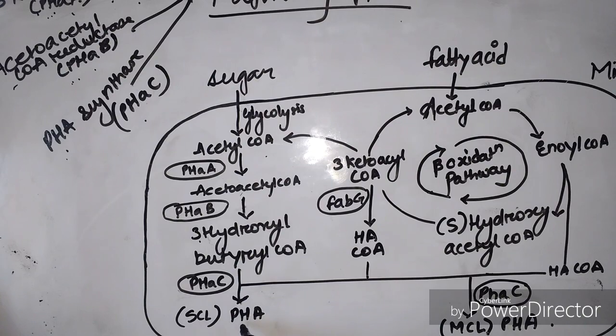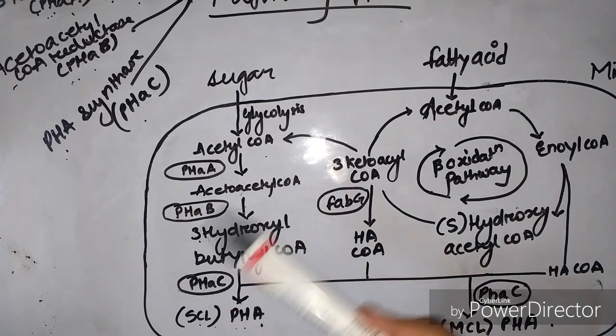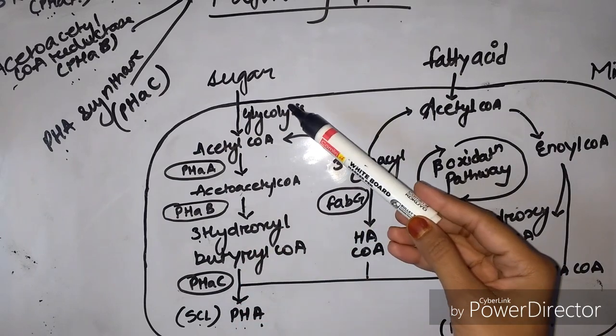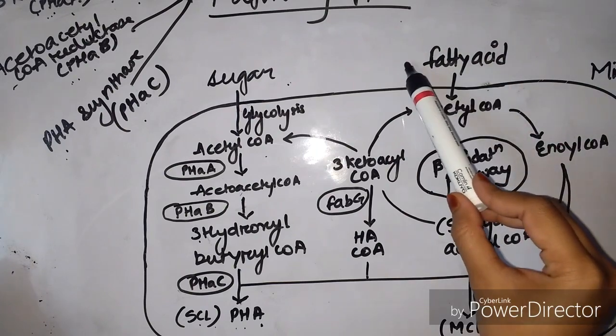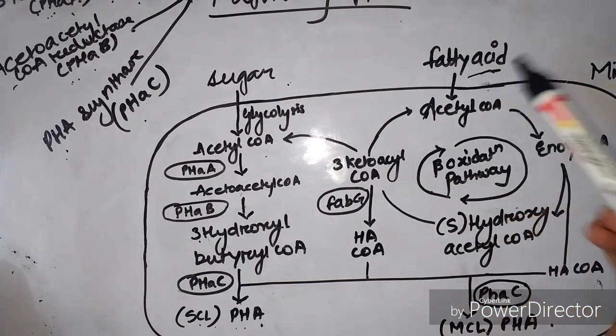The third enzyme, which is PHA-synthase, catalyzes this reaction further to give short chain length PHA. This is how we get PHA from sugars, from the metabolism of sugars.